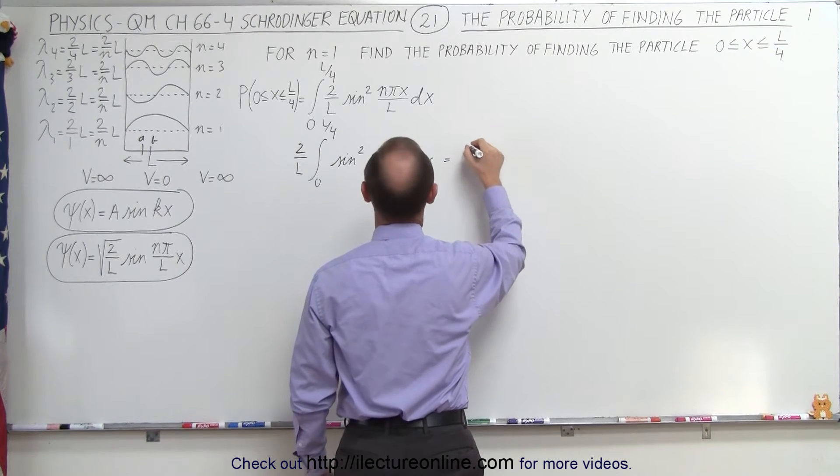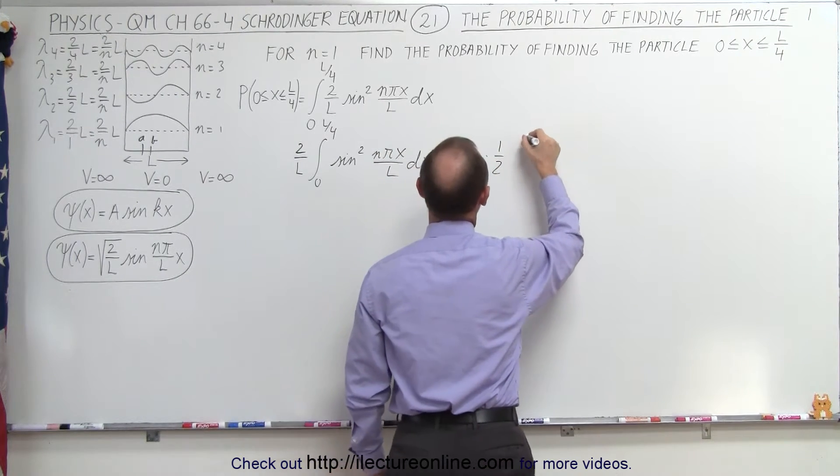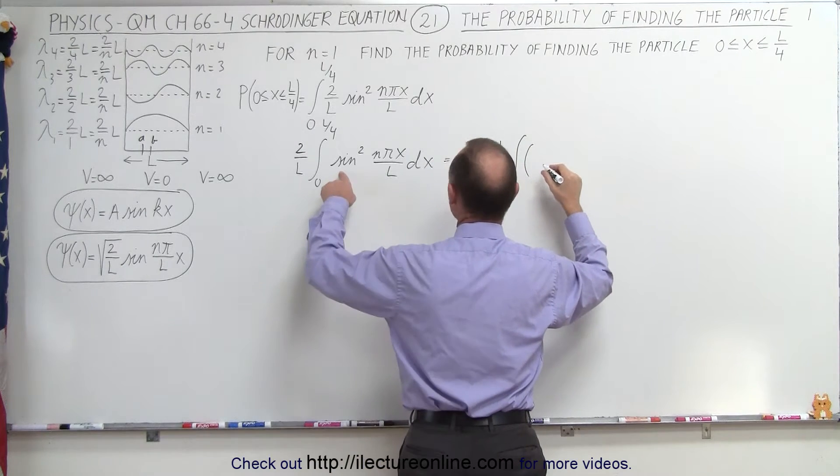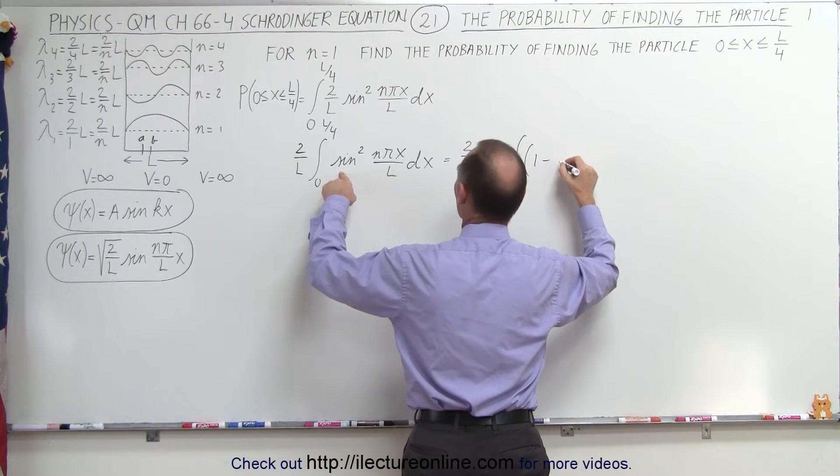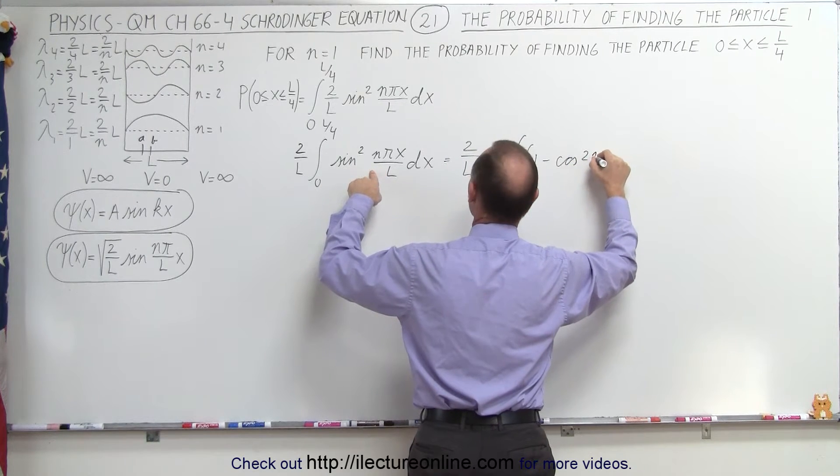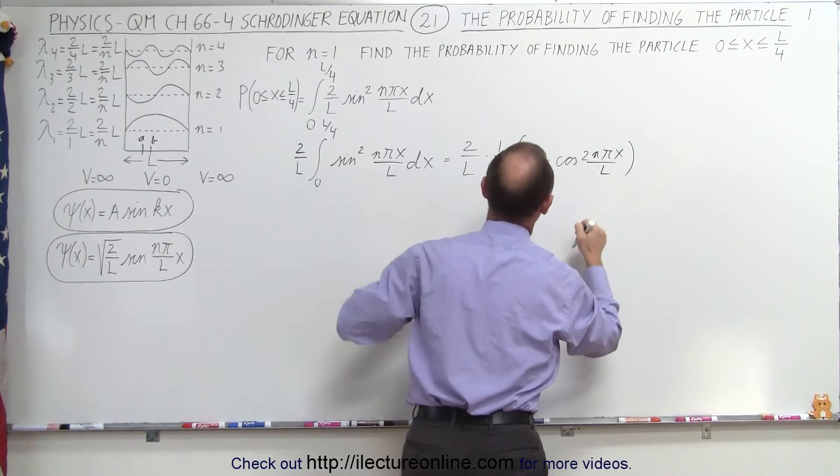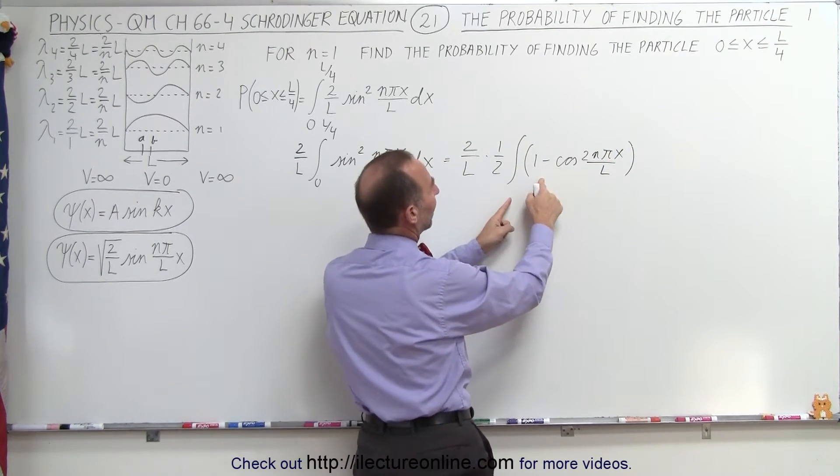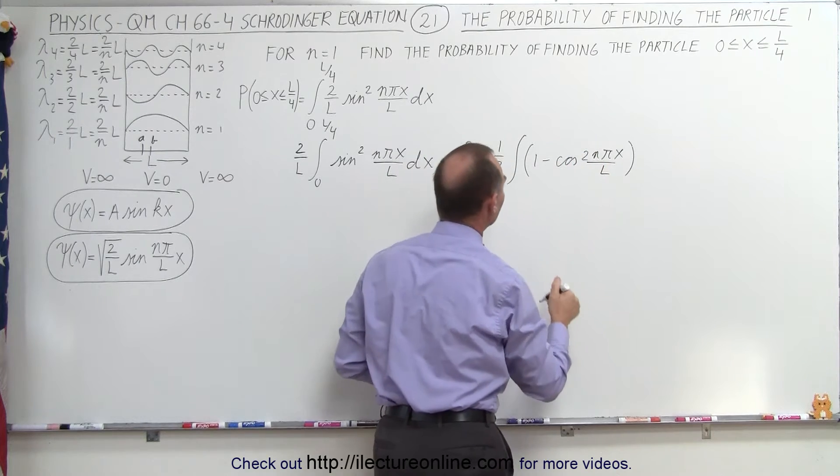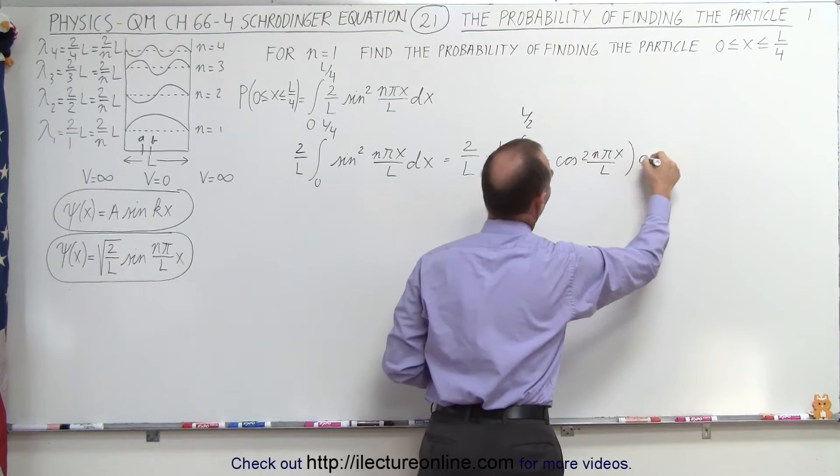This is equal to 2 over L times one half the integral of the quantity 1 minus the cosine of twice the angle, which would be 2 n pi x over L. So that's equal to one half the quantity 1 minus the cosine of twice the angle, we integrate from 0 to L over 4, and of course we still have the dx.